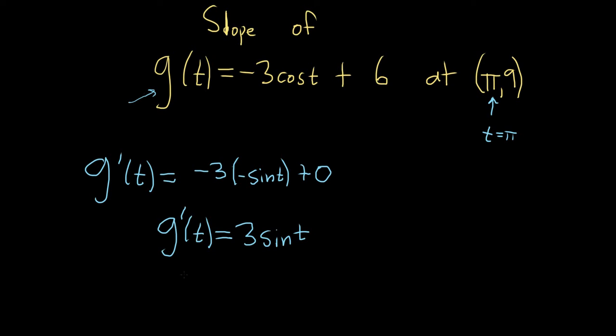So we want to look at what happens when t equals pi. So g prime of pi is equal to 3 times the sine of pi.